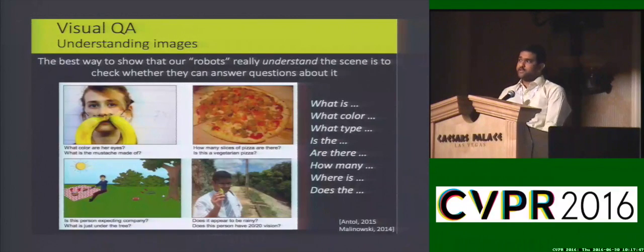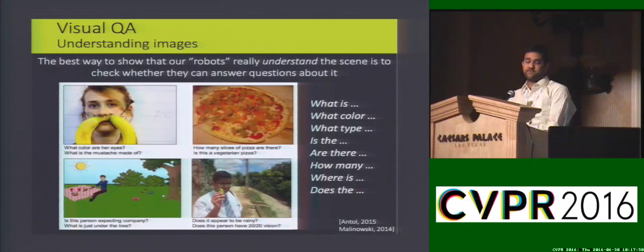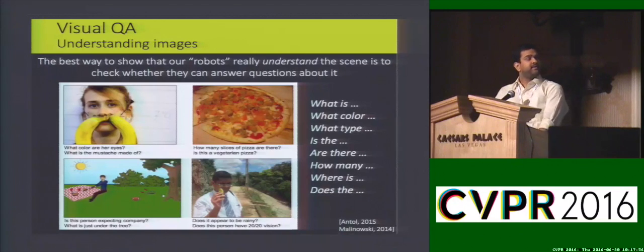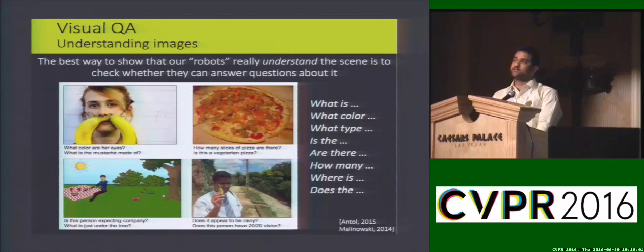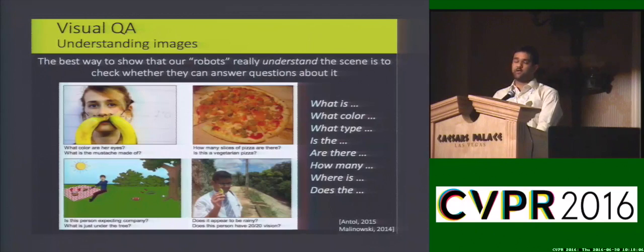Throughout this week and the last couple of presentations we have seen that visual question answering is gaining steam. Answering questions is a natural way to evaluate machine understanding, and currently most datasets are based on single images. They ask questions such as what objects are in the scene, their types, colors, counts, and spatial relative locations.